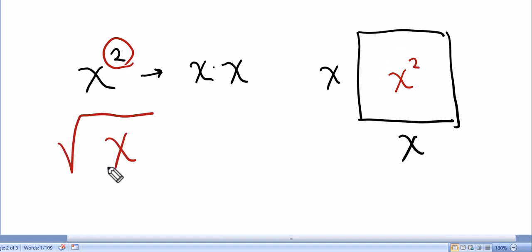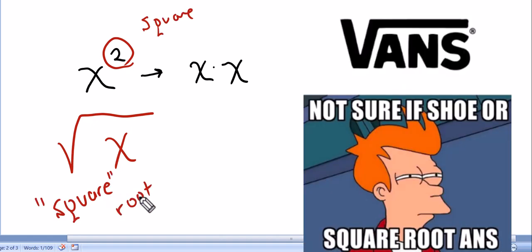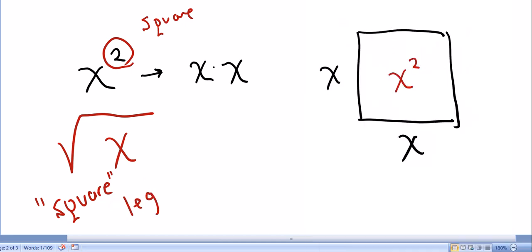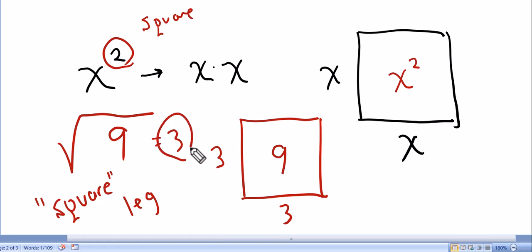How do we say this? We say square root. And this is very appropriate because a square root could essentially be called the square's leg. So what is the square root of 9? Well if I had a square and the area was 9, how long would one of the legs be? Well the squares would have to be the same number. 3 times 3 is 9. So the square root of 9 is 3. Because it's the square's leg.